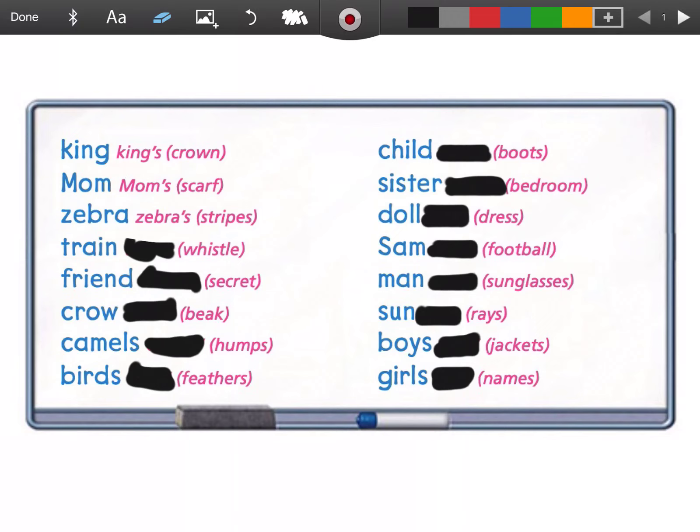A train has a whistle. It's the train's whistle. My friend has a secret. It's my friend's secret. Crows have beaks. This crow owns his beak. It's on his face. It's the crow's beak.